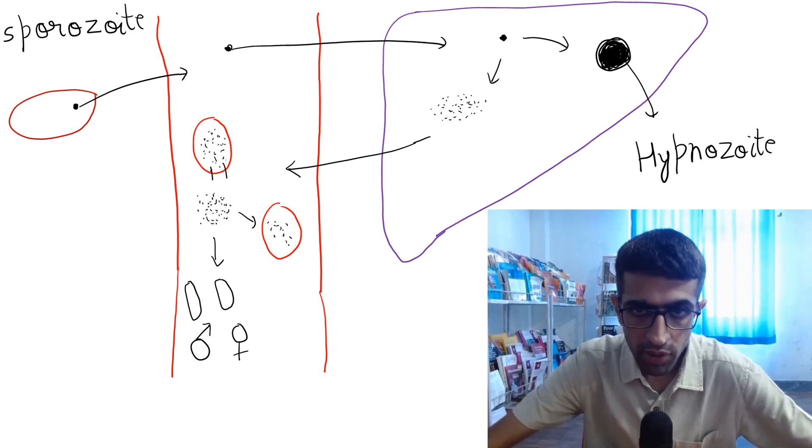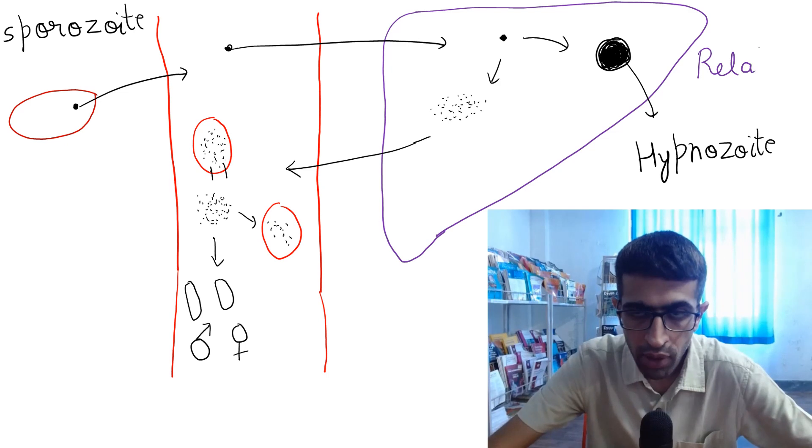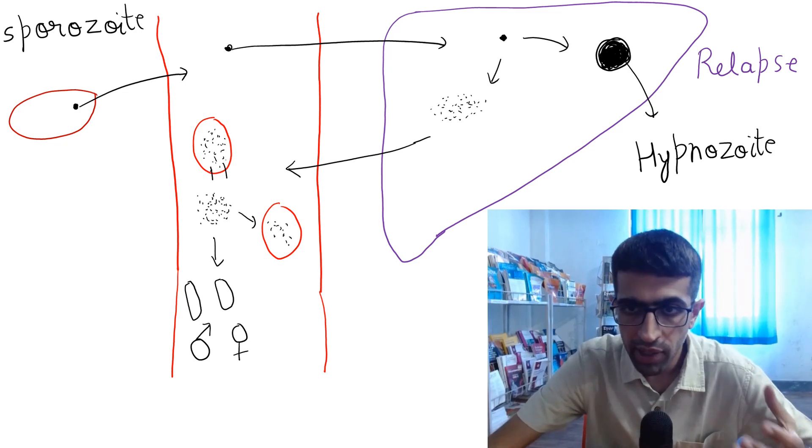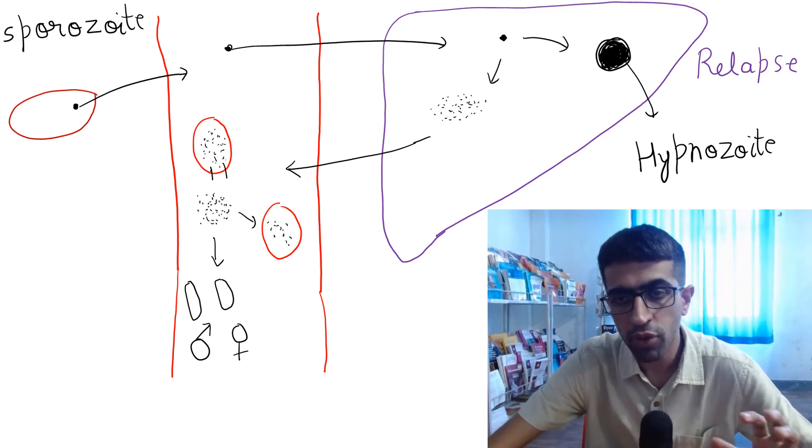Now I'm going to talk about two important things: relapse and recrudescence. Relapse in exam questions—what is this due to? This is due to hypnozoid malaria. And then malaria is going to get hypnozoid, what is going to happen?